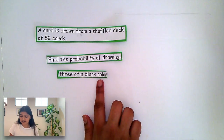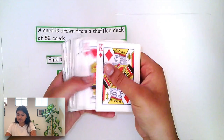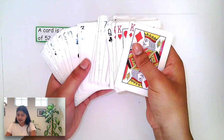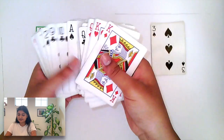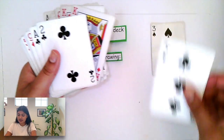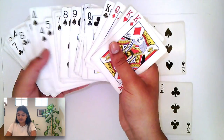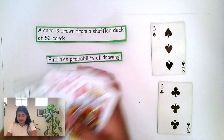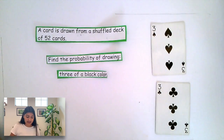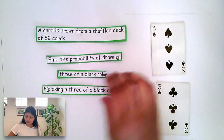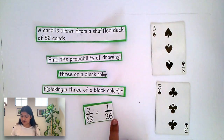Similarly, what's the probability of drawing a 3 of a black color? As we shuffle through our deck, we can see that there is a 3 of spades, as well as a 3 of clubs. These are the only 3s of a card that are in a black color. Same as a king, there are 2 out of a total of 52, which gives us a simplified probability of 1 over 26.